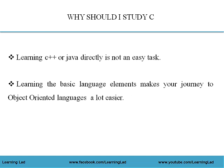Learning C++ or Java directly is not an easy task, because C++ and Java use an object-oriented programming approach. This introduces advanced concepts like class, objects, inheritance, polymorphism, templates, and many more. To understand these complex concepts, you should be aware of the basic language elements. If you know the basic language elements, you can learn these object-oriented languages a lot easier.